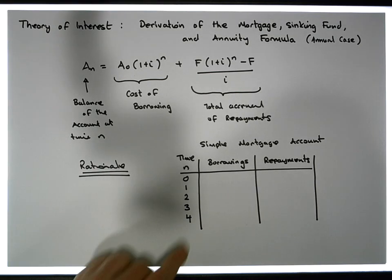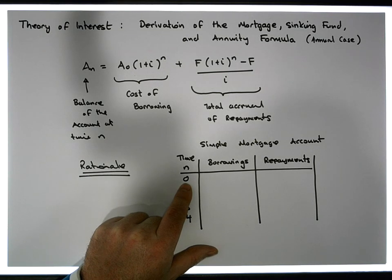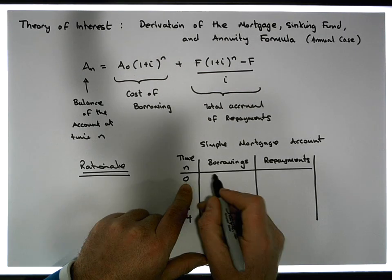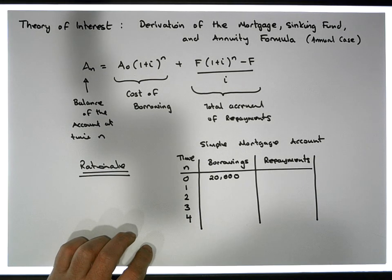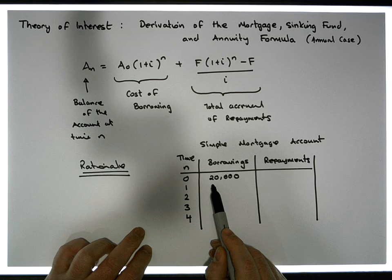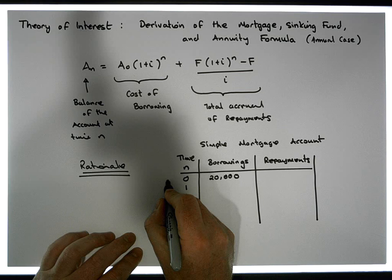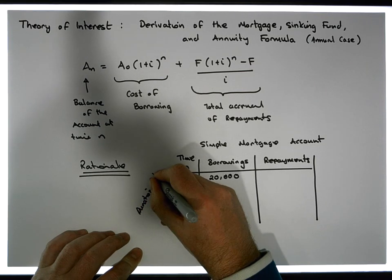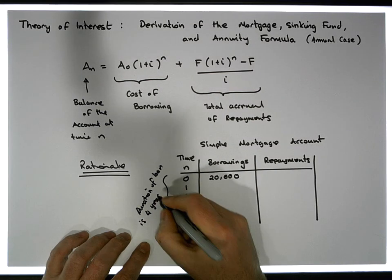For argument's sake, today we borrow — let's keep it simple — let's say the house is quite reasonably priced at 20,000 euros or $20,000. So what we do is we borrow $20,000 from the bank. We're planning on repaying this 20,000 back over four years. So the duration of the loan is four years — it's a four-year loan.